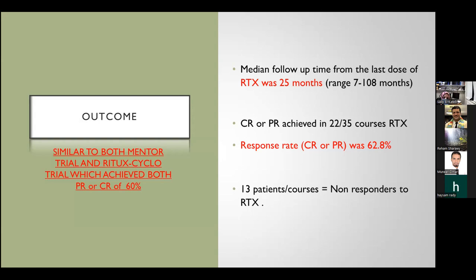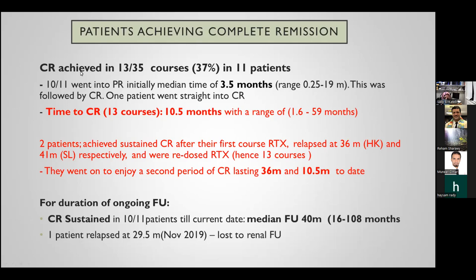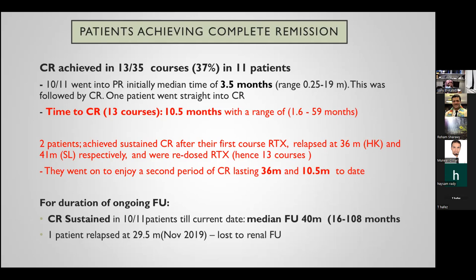Our overall outcome was very similar to both the MENTOR and the Rituxyclo trials. We achieved complete or partial remission in 60% of courses, comparable to these landmark studies. It is well established that the lower the kidney function at start of treatment, the less likely patients are to respond well to immunosuppression, so catching patients at a better level of kidney function is always preferable.